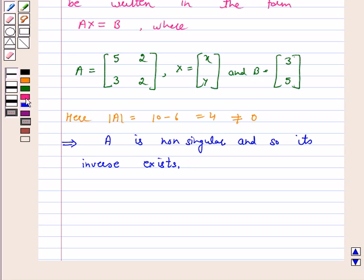Now, adjoint A is equal to... let us interchange A11 and A22, we get 2, 5, and change the sign of the off-diagonal elements to get minus 3, minus 2. We can find adjoint A by taking the cofactors of each element, forming the matrix using the cofactors, and taking its transpose to get the adjoint A.